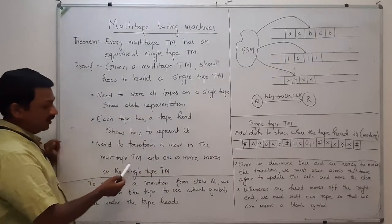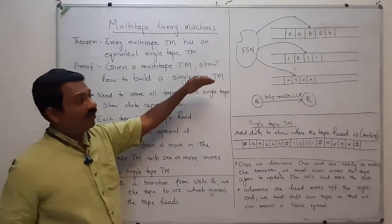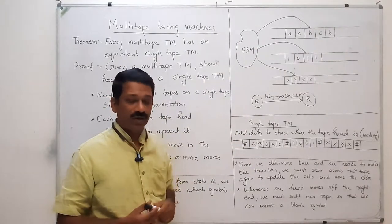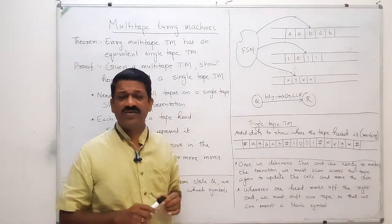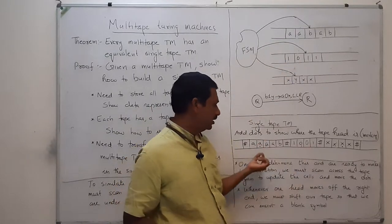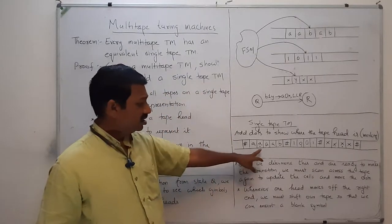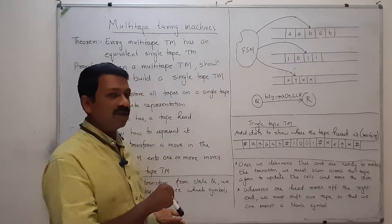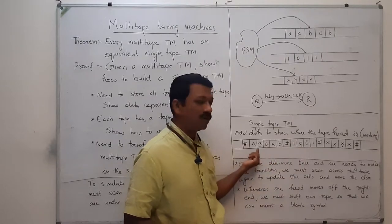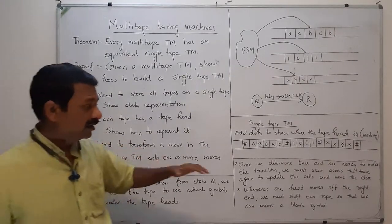When converting a multi-tape Turing machine to its equivalent single tape Turing machine, three things are done: all the information stored in the three tapes is placed on the single tape with hash delimiters; the tape head positions are marked using dots; and the move of the multi-tape Turing machine is implemented accordingly on the single tape.